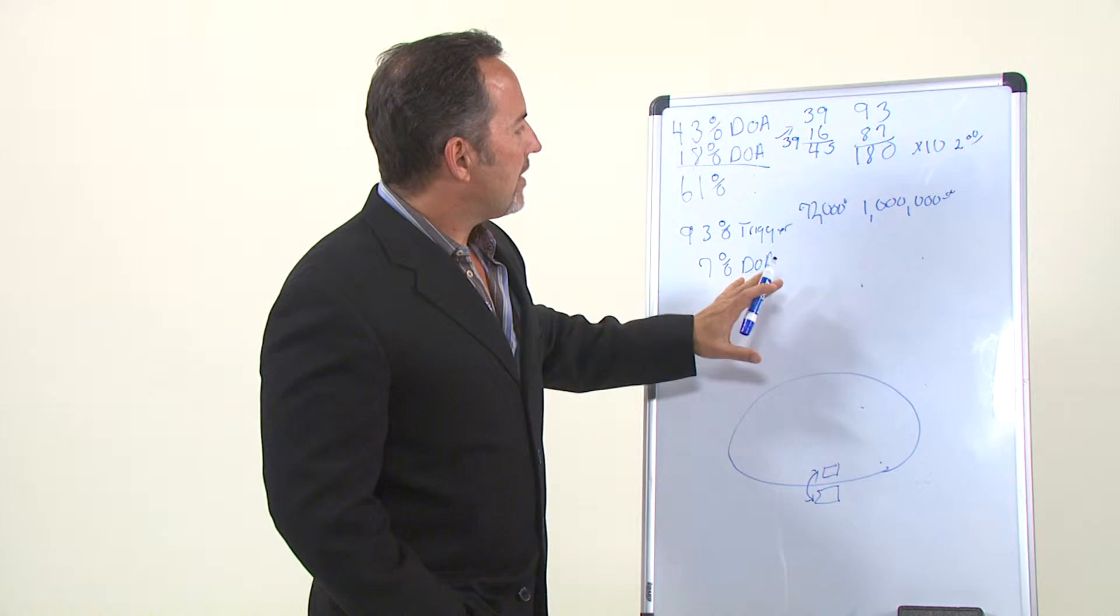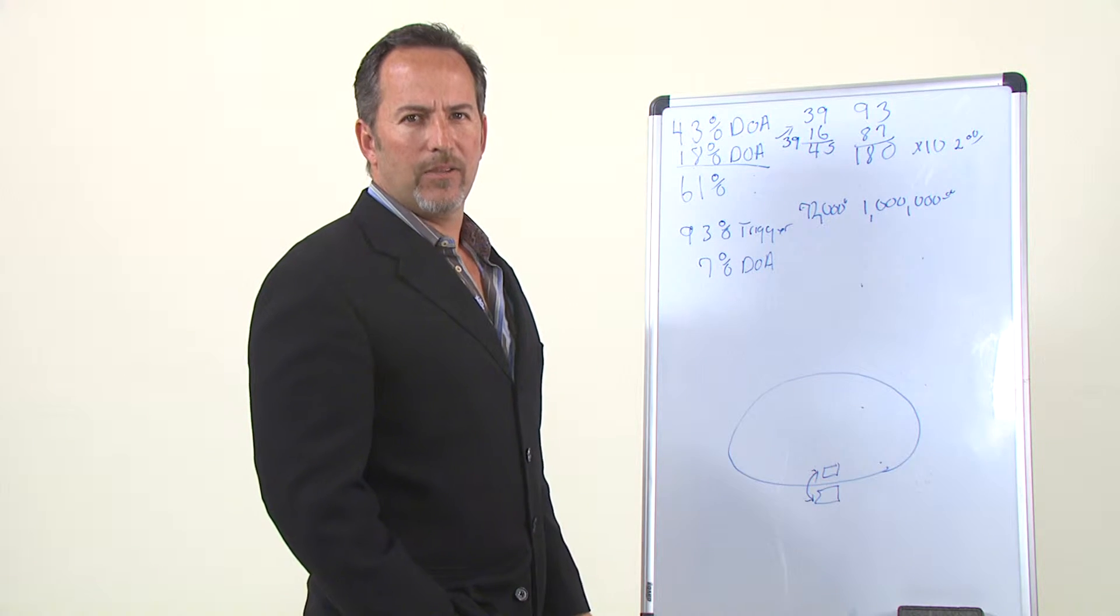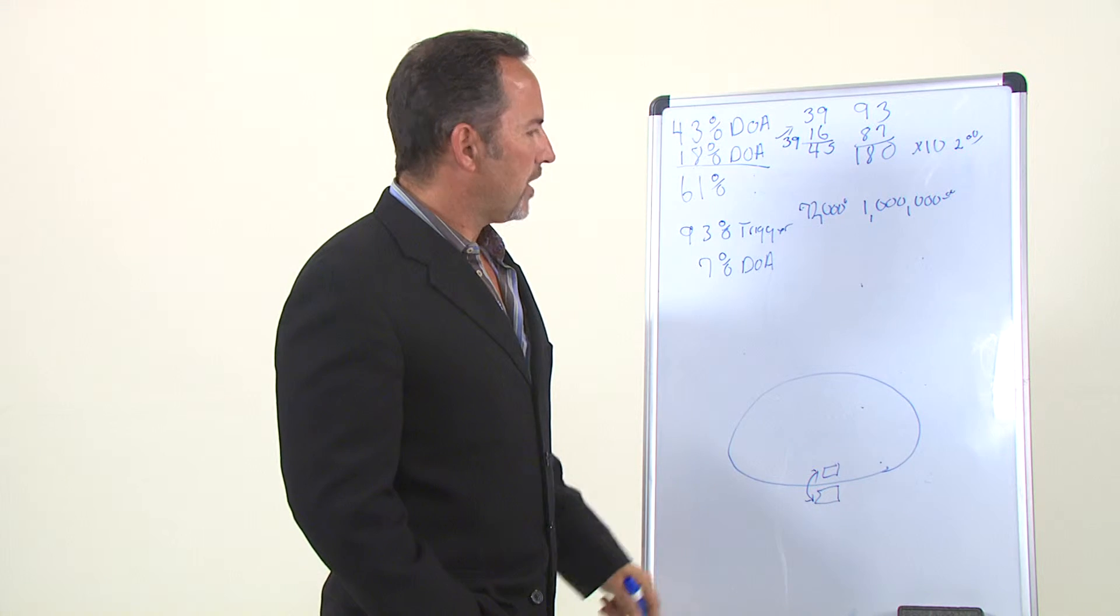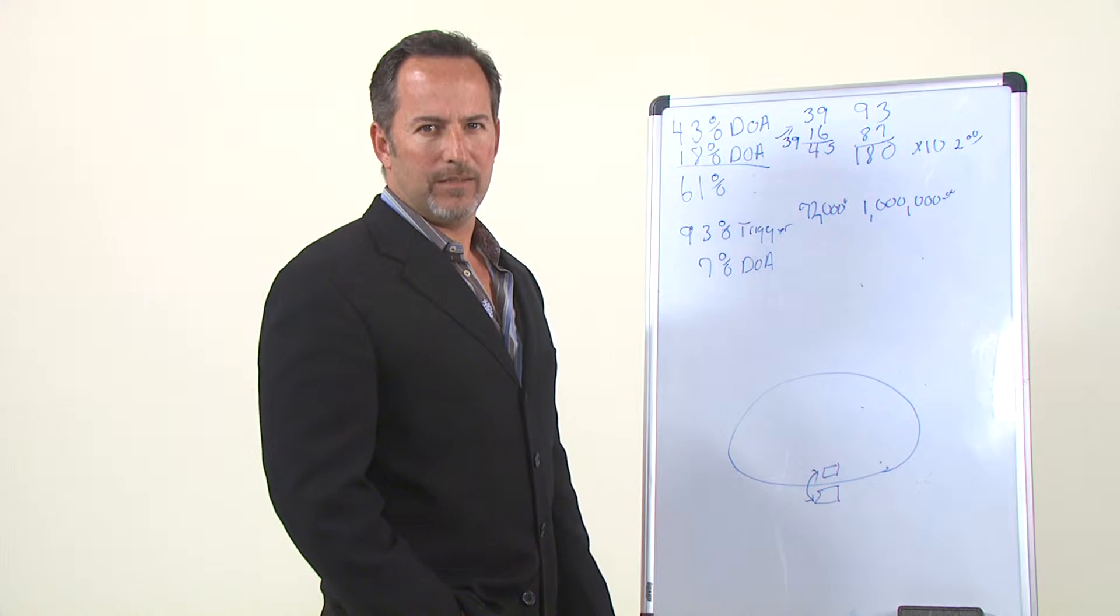So what you have to understand is in this comp plan, a person could be twice as good as somebody in another comp plan, and they still can't beat us because it's not the comp plan. It's what's behind the comp plan. It's the breakage.